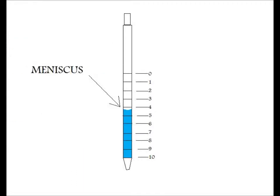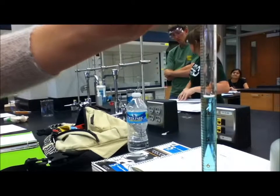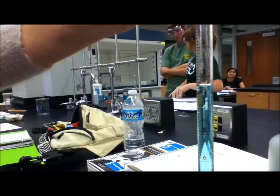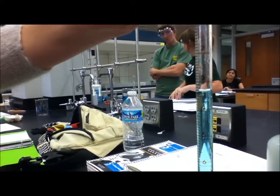Something important to remember is that a meniscus will form when we use glassware for measurement. A meniscus is a concave curve caused by surface tension and the water molecules sticking to the glassware. For visual purposes, we put a sample in a pipette. You read it from the bottom of the curve.